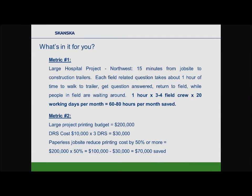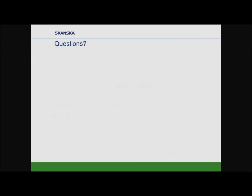The old manual process required project engineers to chase down all drawing sets and update them after every change. The newer process has one person at a computer updating documents and pushing them out to digital resource stations, iPads, Box, or an FTP site. On a large hospital project in the northwest, the job site was 15 minutes from the construction trailers — that round trip easily cost an hour or two per worker. The printing cost on that project was $200,000. The digital resource stations cost around $10,000 each; with three stations at $30,000 total, we saved at least $70,000 on that job.